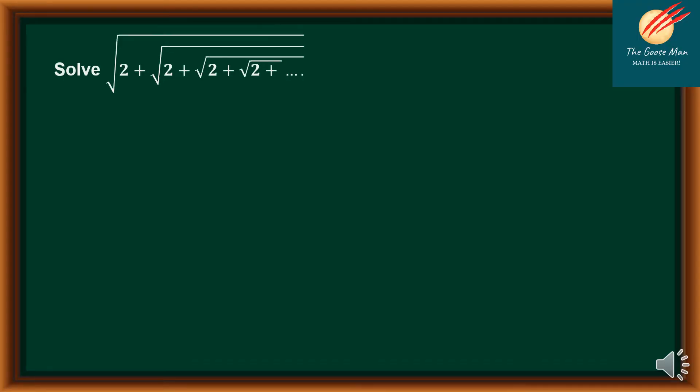If we have this expression — the square root of 2 plus the square root of 2 plus the square root of 2 plus the square root of 2 — observe that the square root of 2 is nested within the radicals, inside the radicals of another radical and another radical, and so on and so forth.